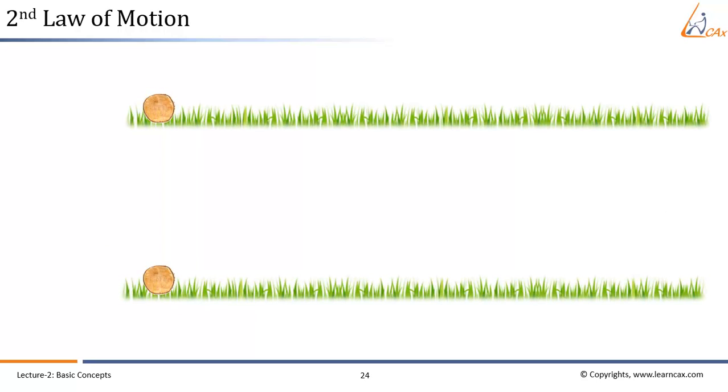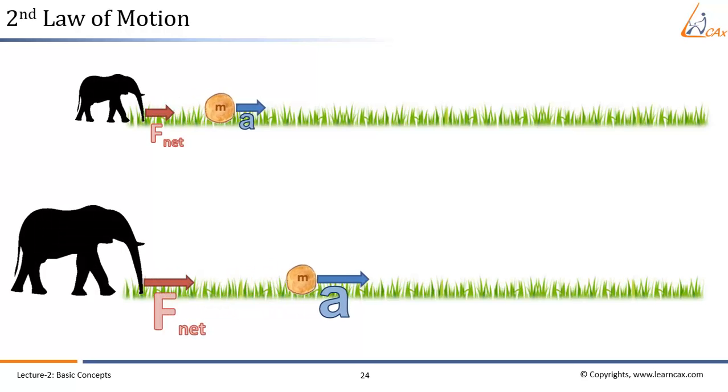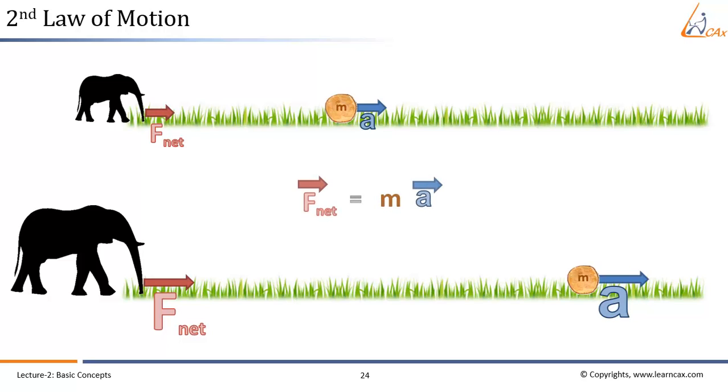Now, let's take two identical objects with the same mass and apply two different net forces on them. Yes, as expected from second law of motion, the object on which the higher net force acted accelerates more than the other one. Also, the direction of motion is same as that of the net force. So, for the same mass, when the net force acting on the object is increased, the acceleration of the object is increased.